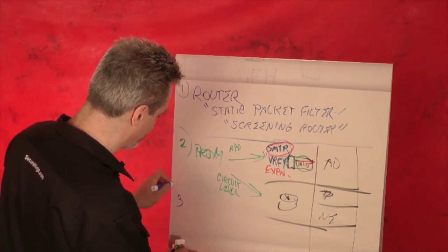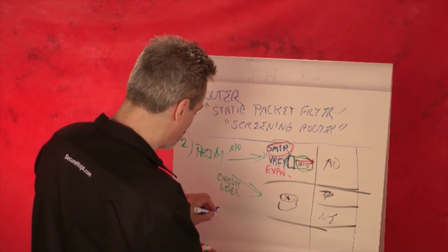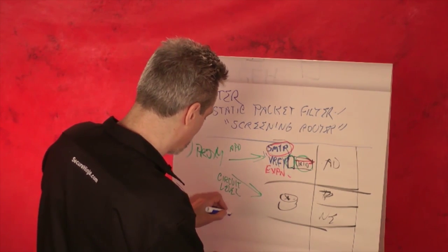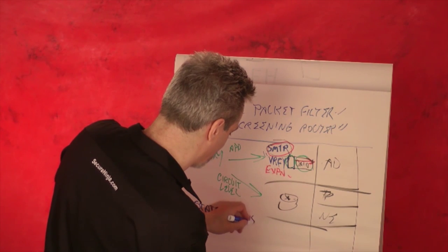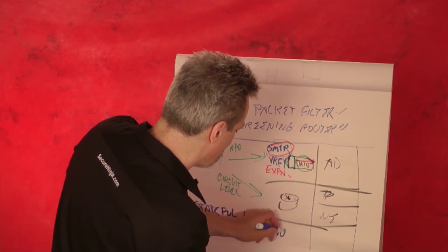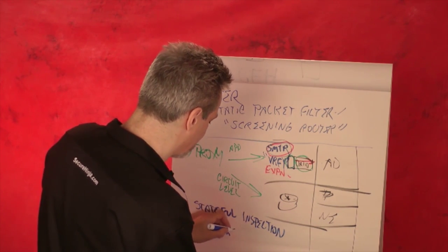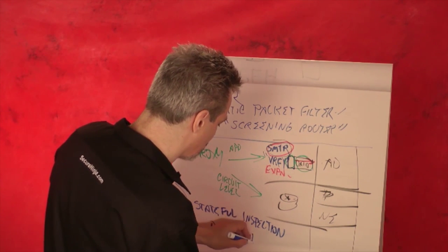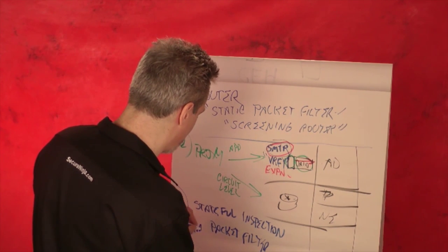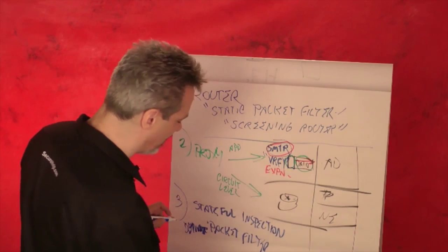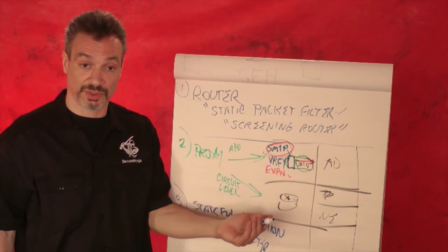Gen 3 is known as Stateful Inspection — and Checkpoint, I believe, trademarked that term. It is a packet filter, but it's dynamic. Not everybody uses the same default rules, but a very common firewall rule is: no one's allowed in unless it was explicitly asked by somebody on the inside, and everyone's allowed out unless expressly denied.